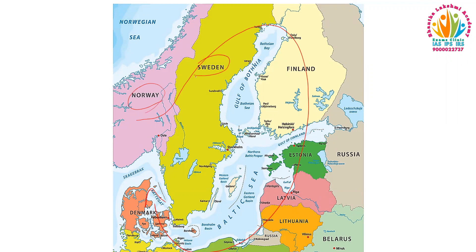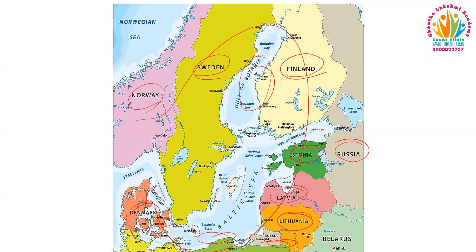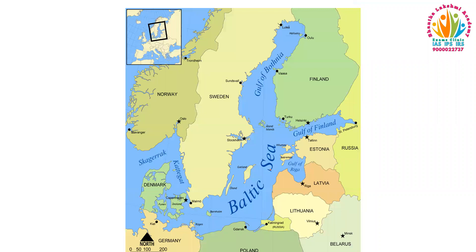The countries bordering the Baltic Sea in clockwise order are: Norway, Sweden, Finland, Russia, Estonia, Latvia, Lithuania, Poland, Germany, and Denmark. It also consists of the Gulf of Bothnia, Gulf of Finland, and Gulf of Riga. The Gulf of Bothnia lies between Sweden and Finland, the Gulf of Finland between Finland and Estonia, and the Gulf of Riga shares its borders with Estonia and Latvia.